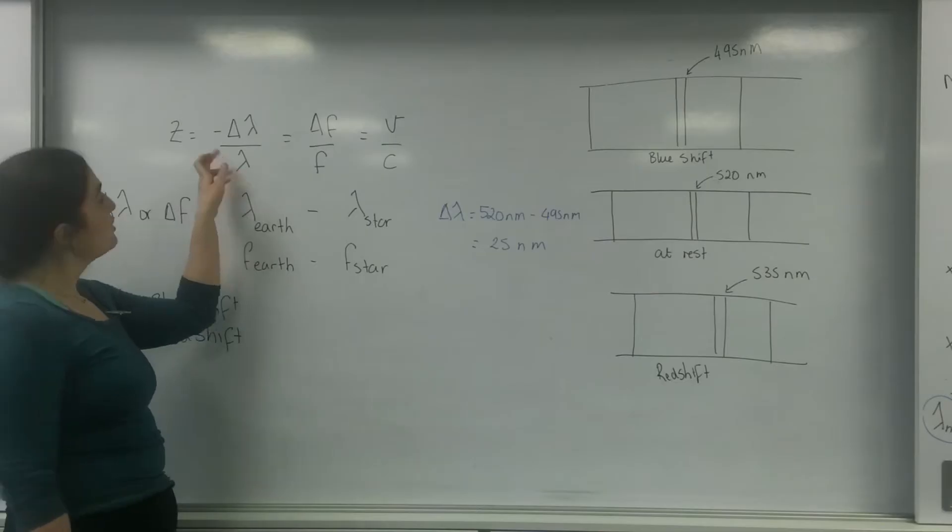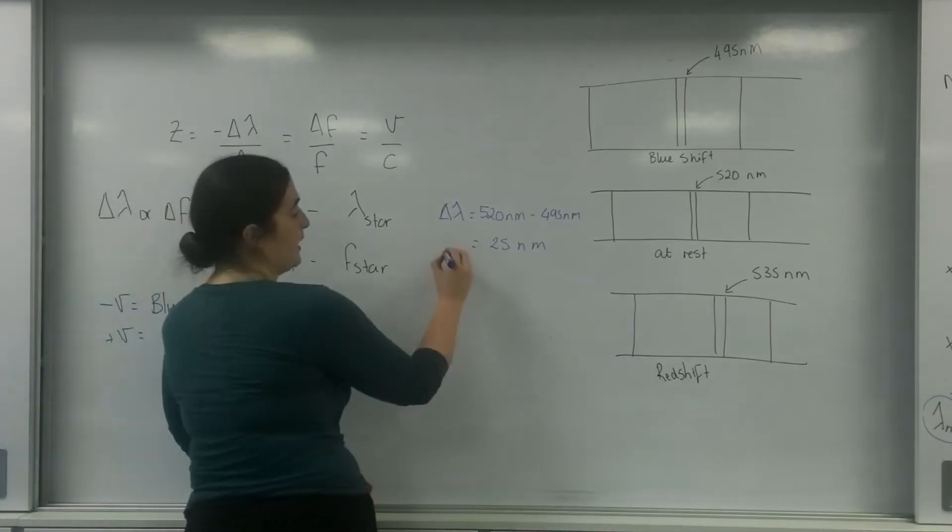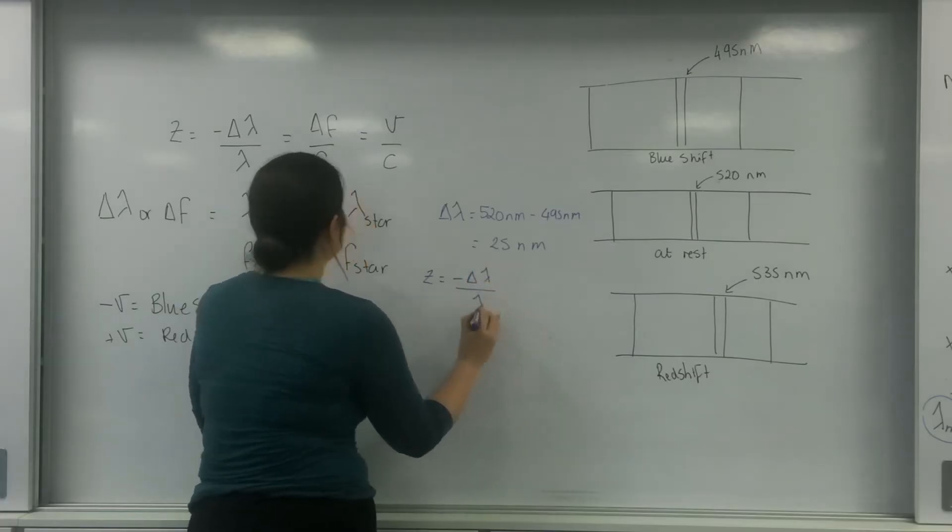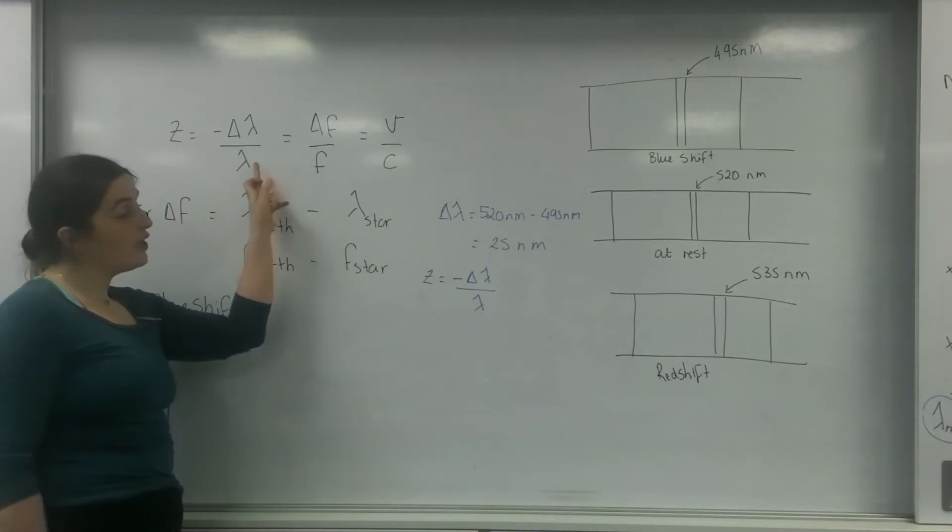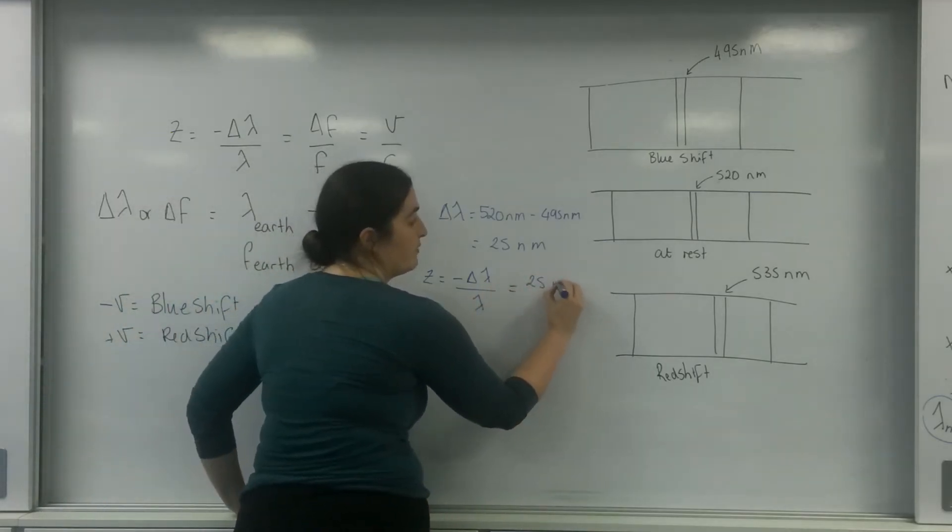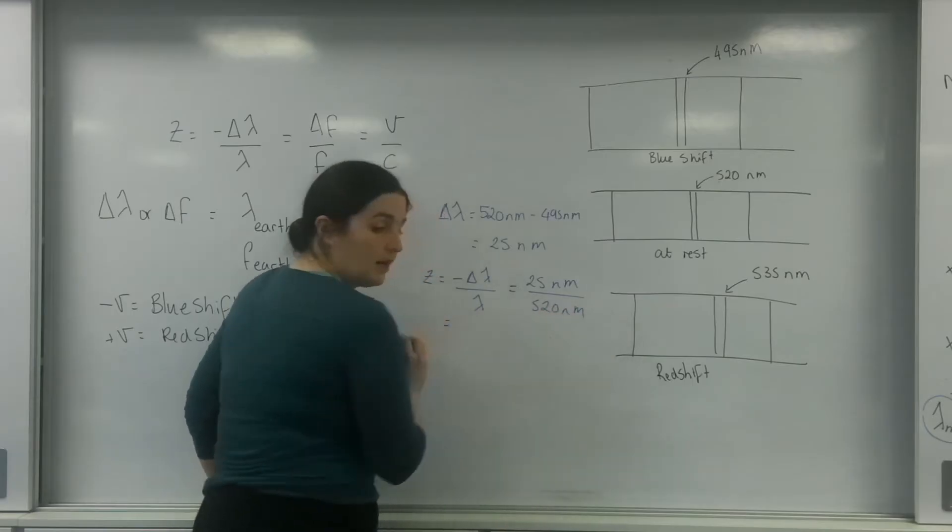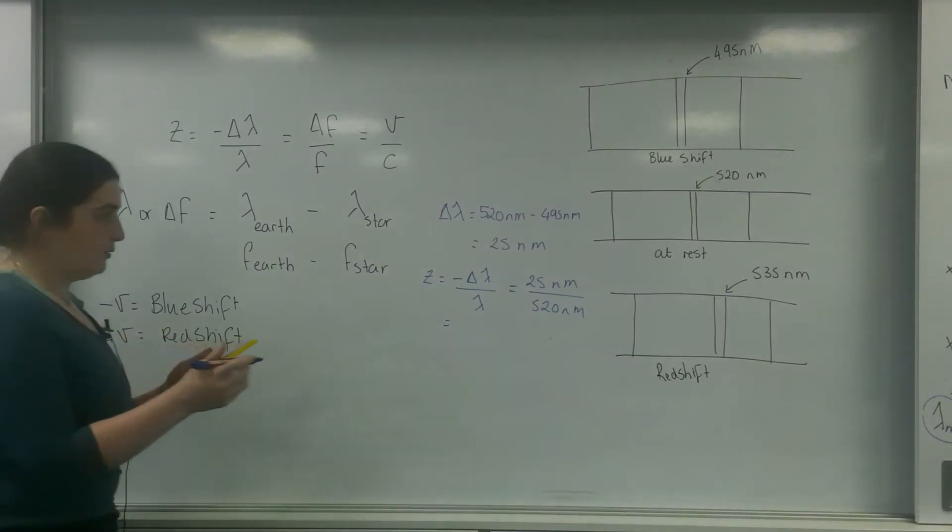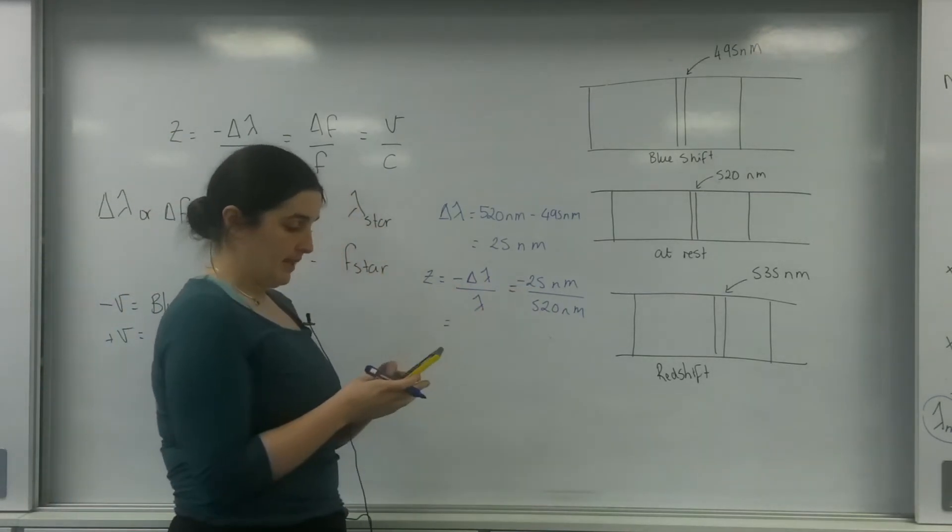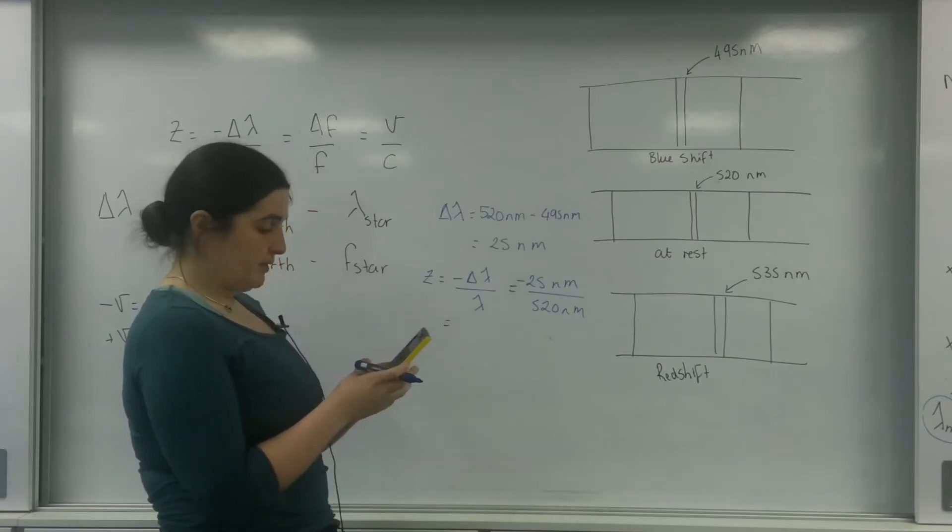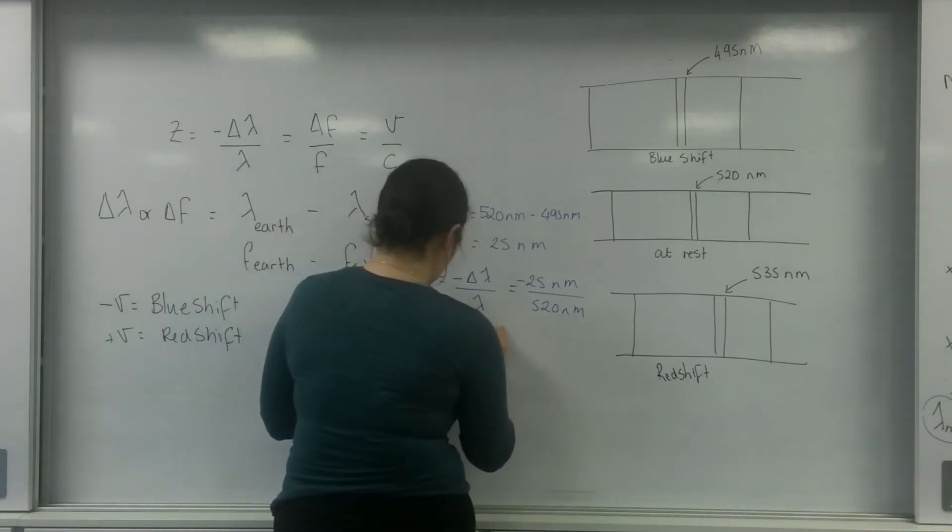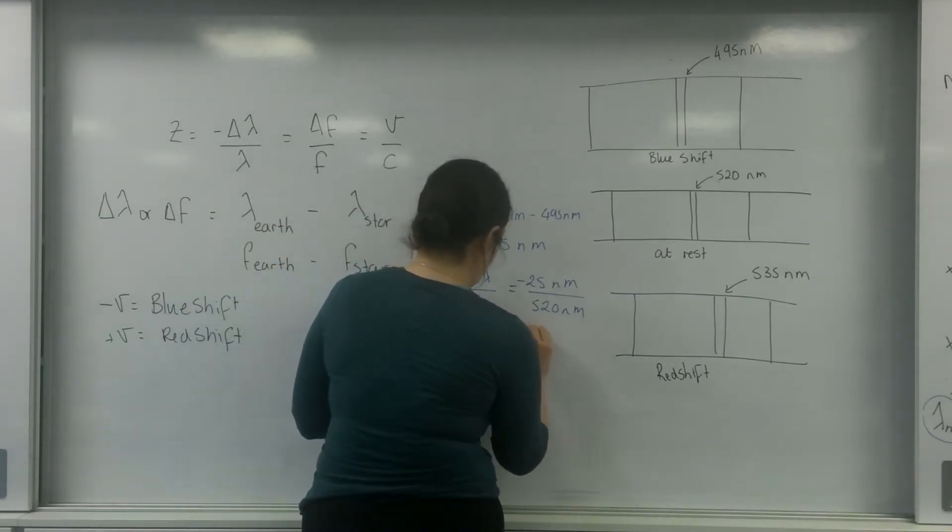So I'm going to use this formula to find the Doppler shift. So I know that Z is minus the change in wavelength over the wavelength. And this wavelength is the one at Earth. So in this case, it's going to be 25 nanometers over 520 nanometers. So 25 divided by 520 is minus 0.048.